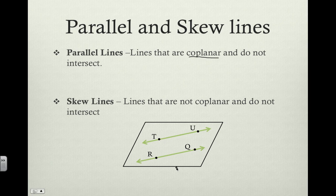Skew lines are kind of similar to parallel lines in the fact that they do not intersect, but they're slightly different in that they are not co-planar. So they don't lie in the same plane — co-planar means same plane.